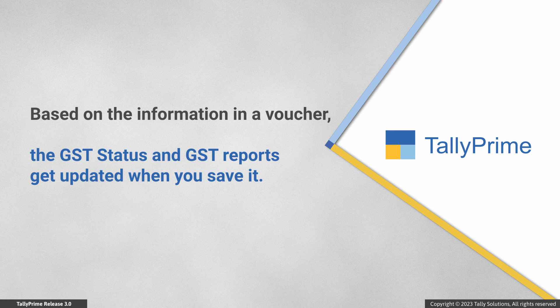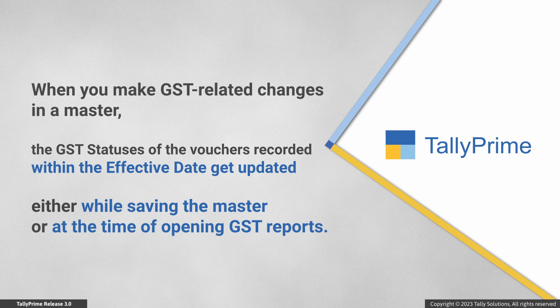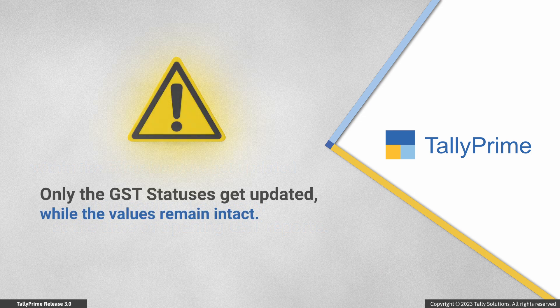However, when you make GST-related changes in a master used in a voucher recorded within the effective date, the GST status of the voucher gets updated while keeping the values intact. This is because TallyPrime recomputes GST statuses of the affected vouchers either when you save the master or while opening the GST reports. It is important to note that only the vouchers recorded within the effective date specified by altering the master get affected.